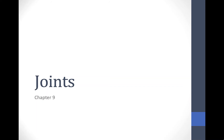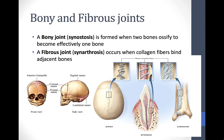Now we're going to look at joints, which are the spaces in between the bones in your skeleton. There are different classifications of joints. The first type is called a bony joint. 'Sin' means together and 'os' means bone, so this is 'together bone.' A bony joint is formed when bones become effectively merged into one.